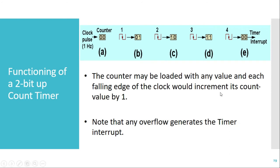Whenever we operate the timer it has an internal register. This is an example of a 2-bit counter, but in 8051 we have 16-bit counters or timers, so those will have 16-bit registers. Here in this example there are only 2-bit registers because it is a 2-bit counter. Whenever we give a clock pulse as input, the value in the counter is incremented by 1. Initially assume the value is 00; when the first clock pulse is given, at every falling edge the value will be incremented by 1, so the value becomes 01.